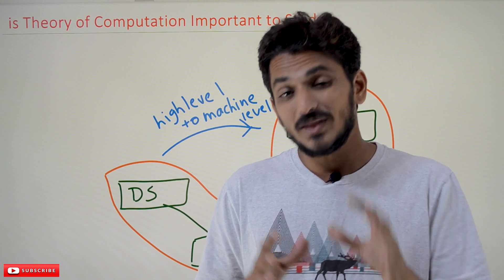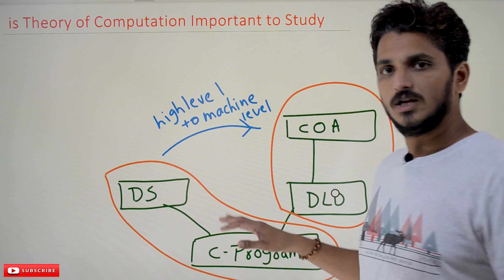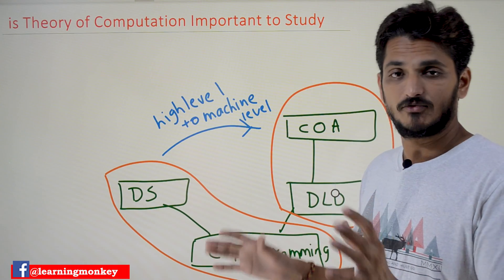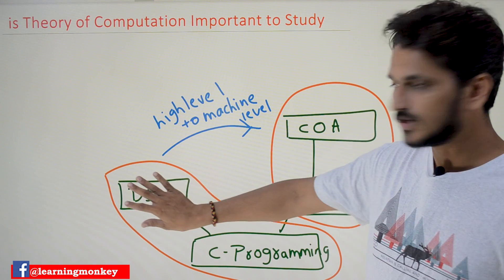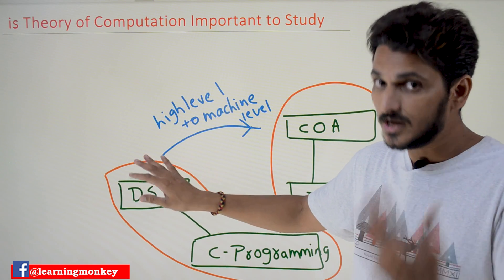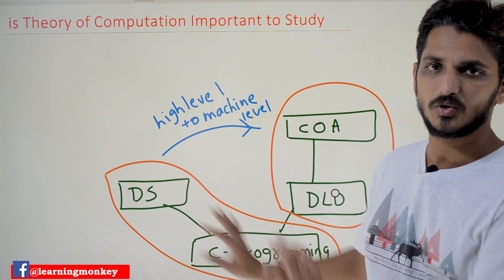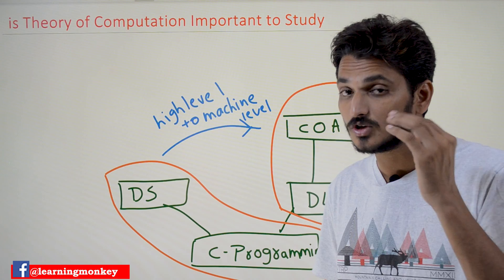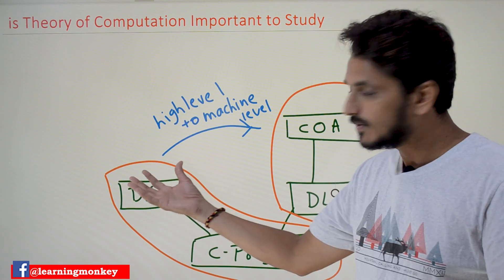As discussed in previous videos, the first subject a computer science student is going to study is C programming. After that, he will go for Data Structures to improve his coding knowledge. This is one package — C programming and Data Structures — that gives you a good intuition of programming, meaning high-level programming languages and coding skills.